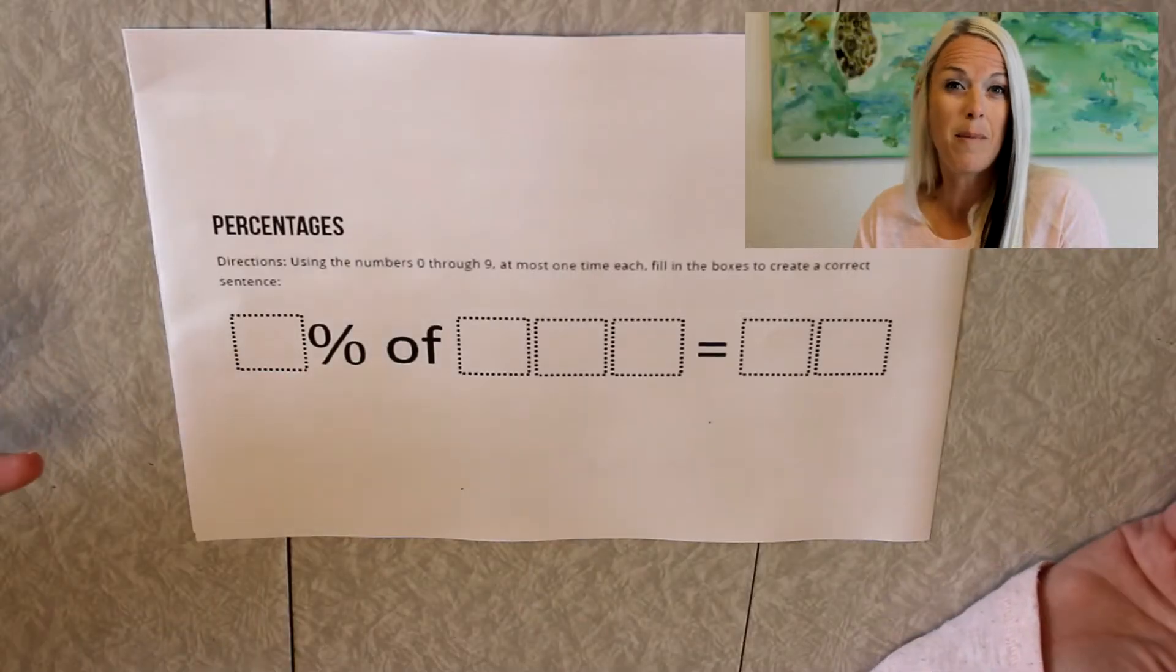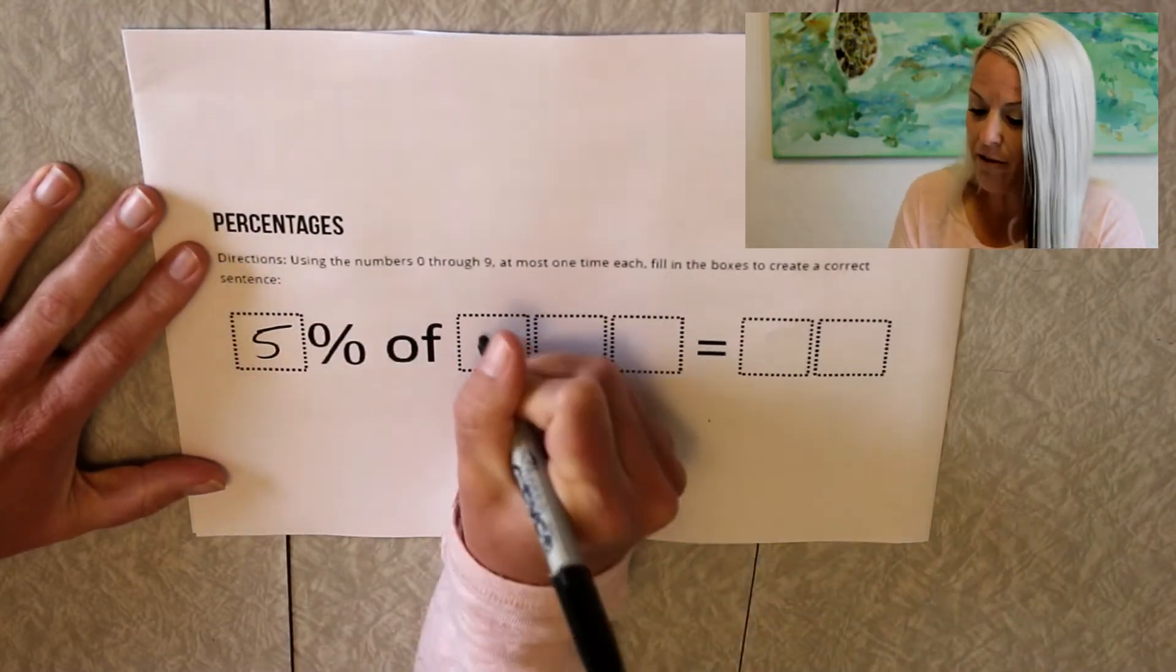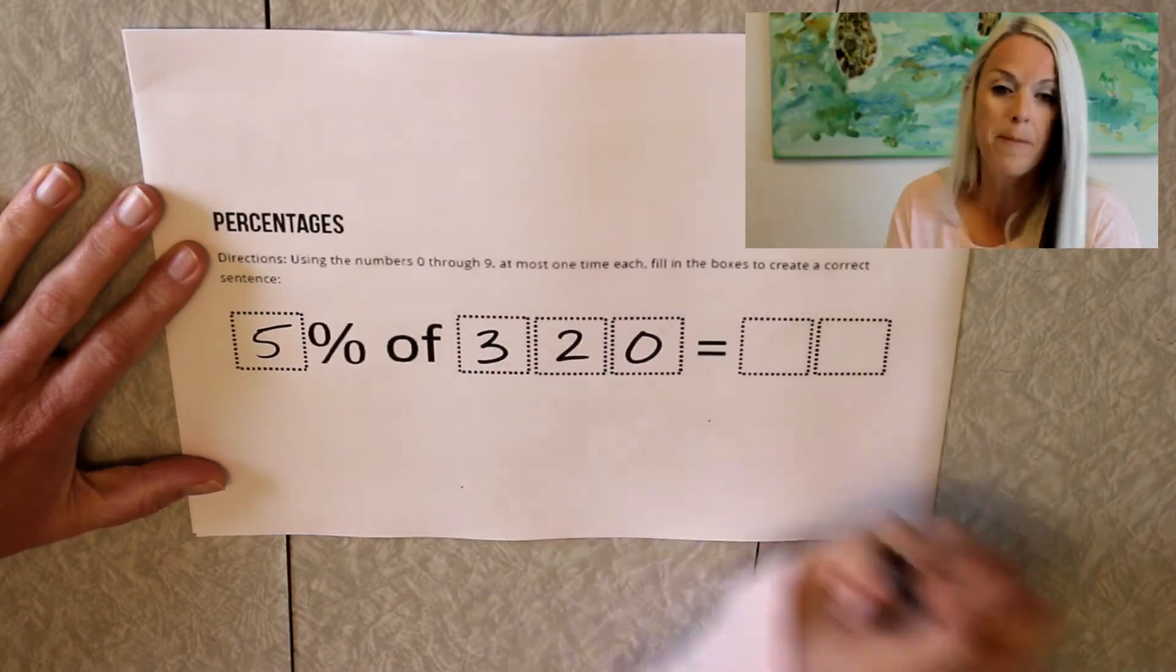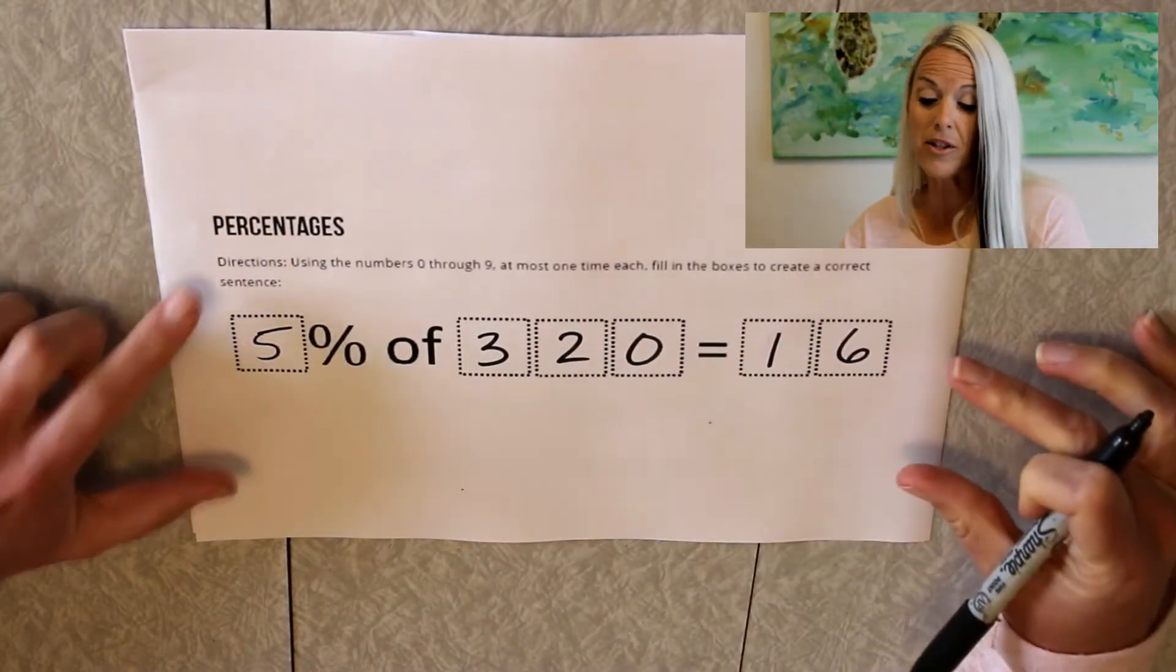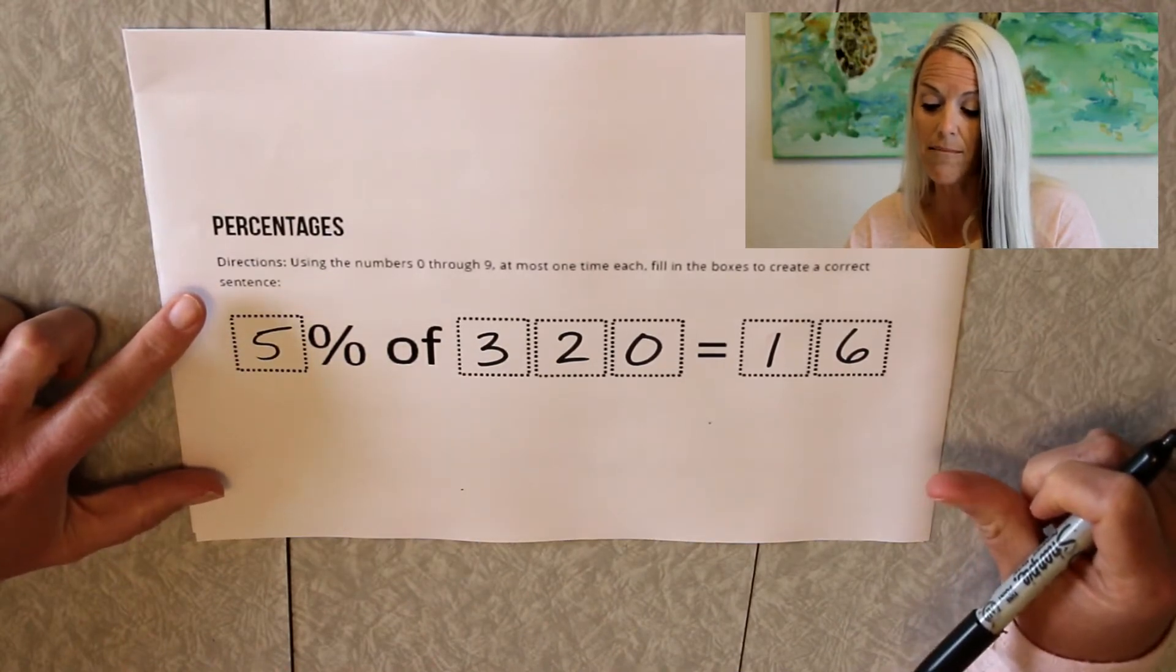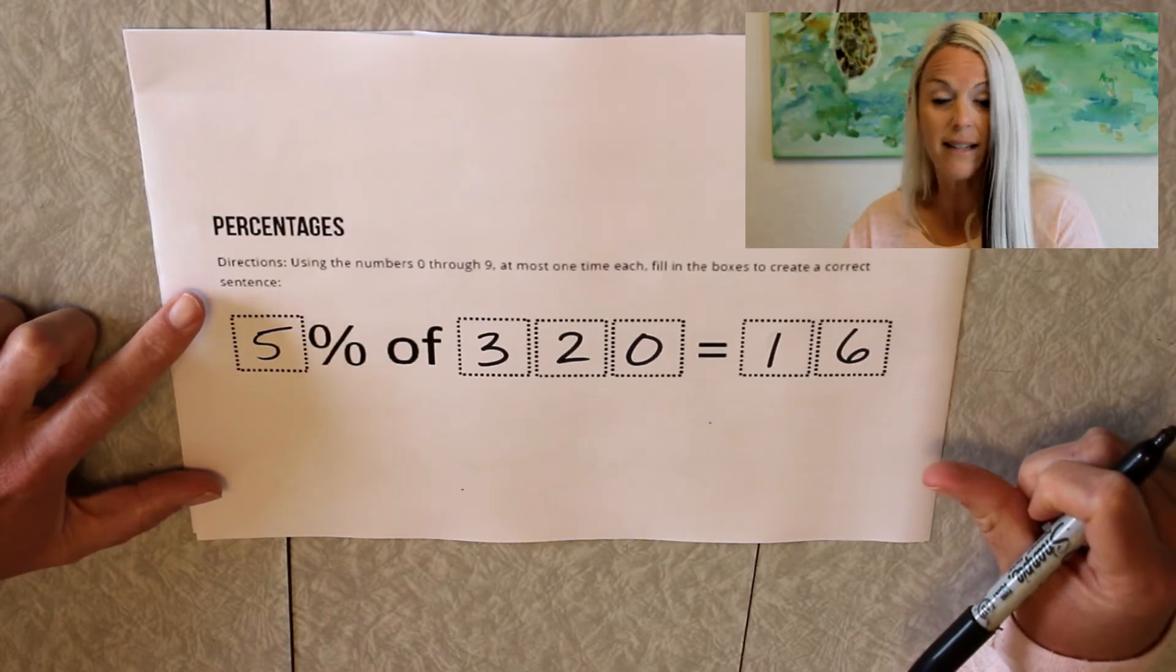The person's answer that I want to highlight today is Sienna's. So I'm going to go ahead and talk about Sienna's answer here, Sienna in Period 1, and give you that as an example so that we can kind of talk about the math behind this. So Sienna said that 5% of 320 is 16. Now the directions were using the numbers 0 through 9 at most one time each. Fill in the boxes to create a correct sentence.